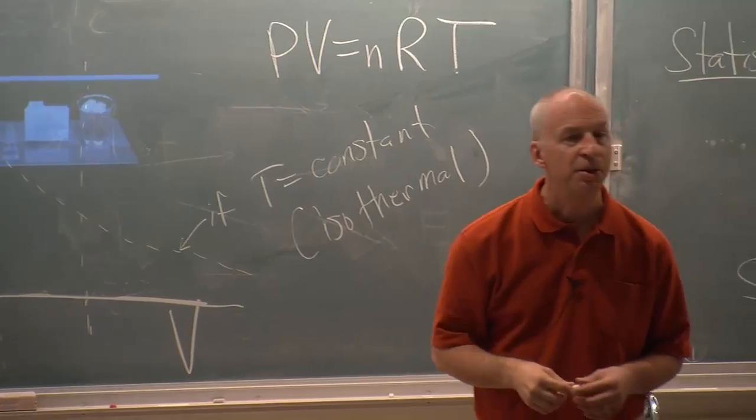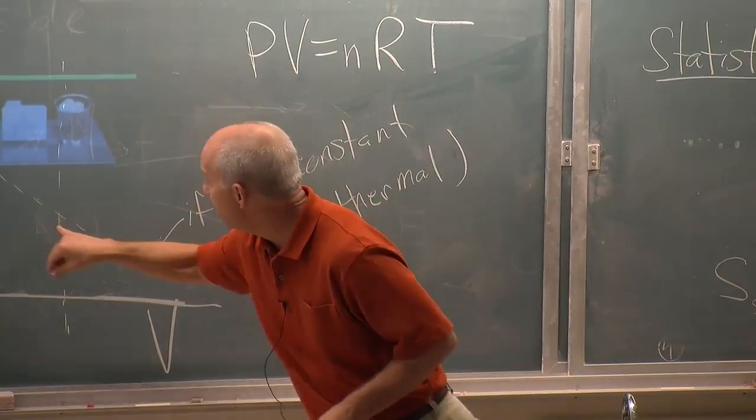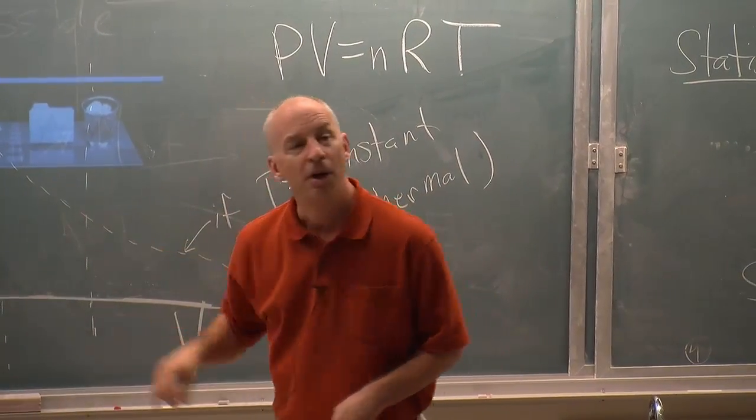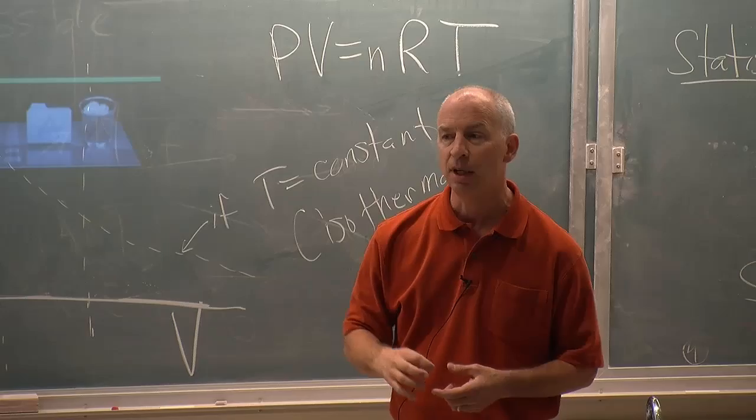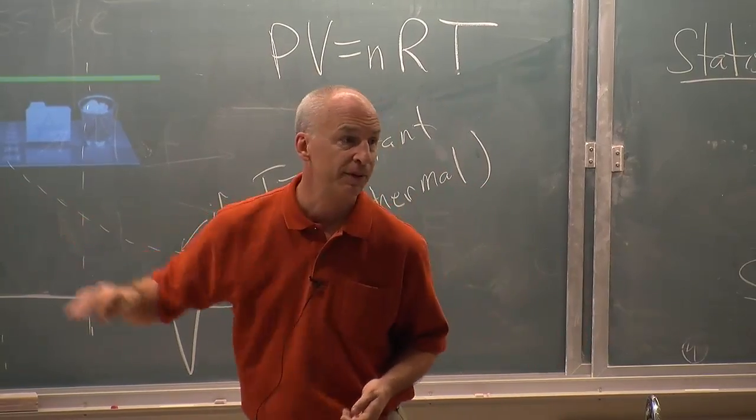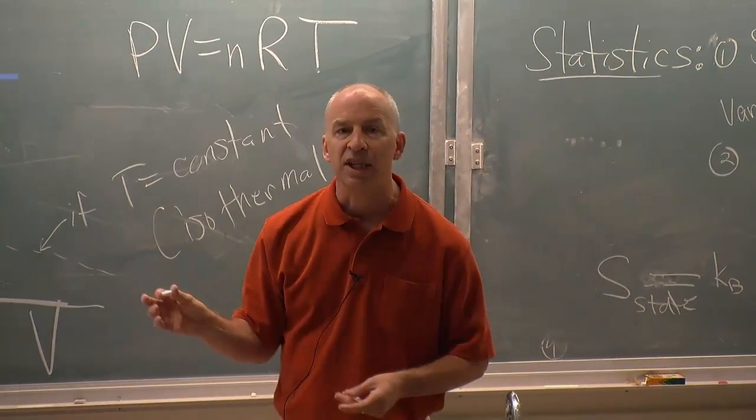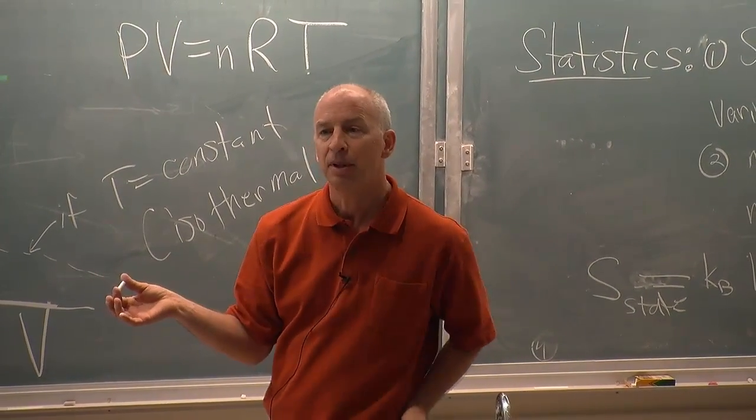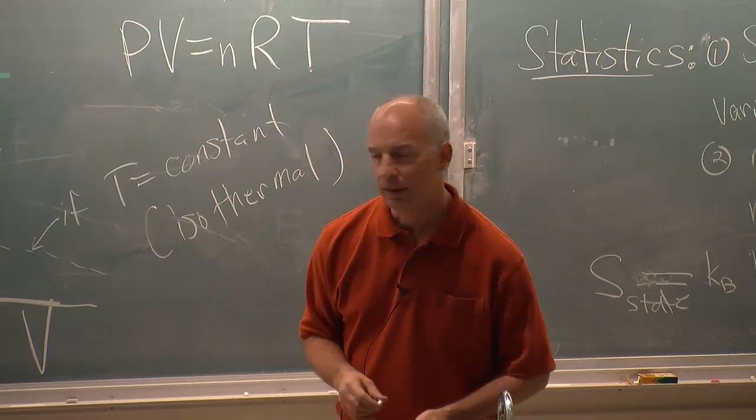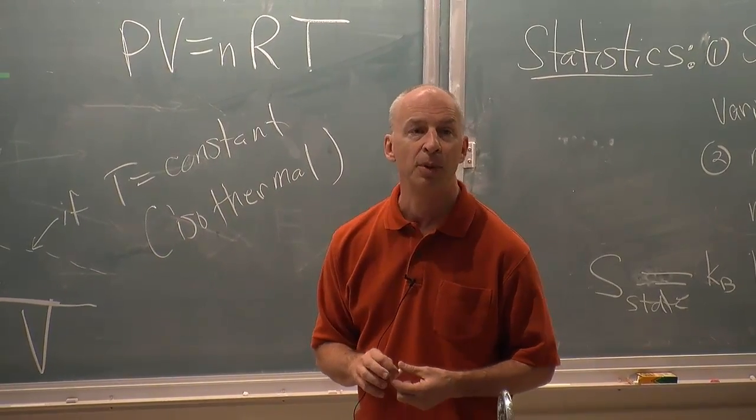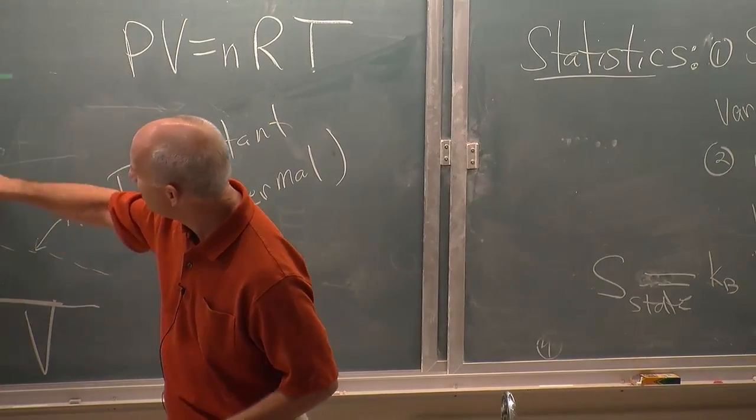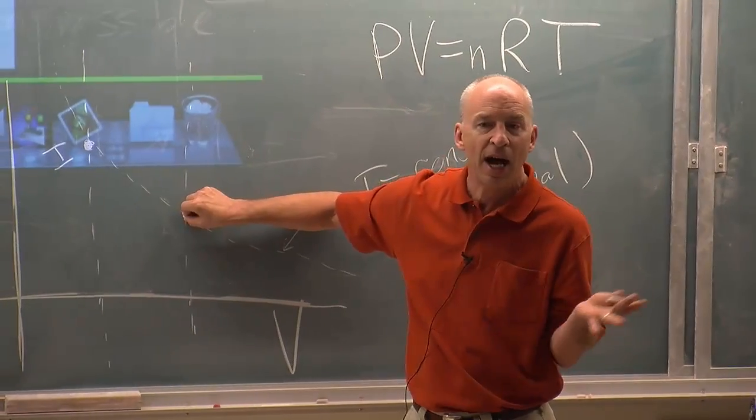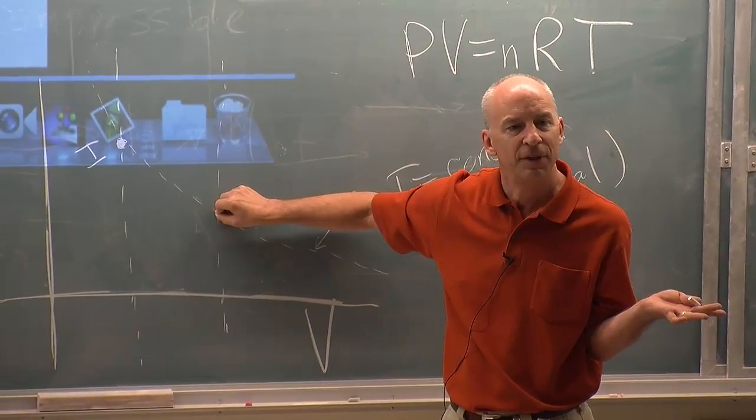This is not an isothermal process. When we double the volume, and that volume does approximately double, when we double the volume here, the temperature goes down. We can tell that from the first law. We've taken work energy out. We didn't put any heat in or out. So energy came out, and the thermal energy must have gone down. So the temperature went down. Where on this thing, compared to this point right here, where it would have been at constant T, am I at a higher pressure or a lower pressure if the temperature went down?